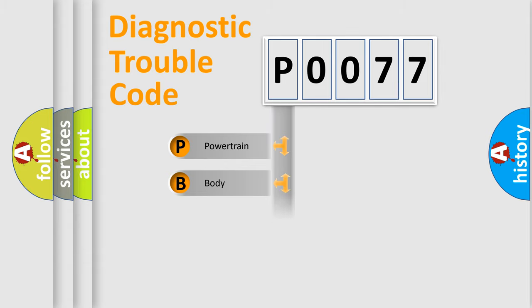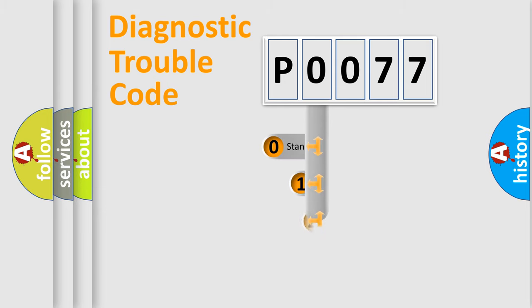We divide the electric system of automobile into four basic units: powertrain, body, chassis, and network. This distribution is defined in the first character code.